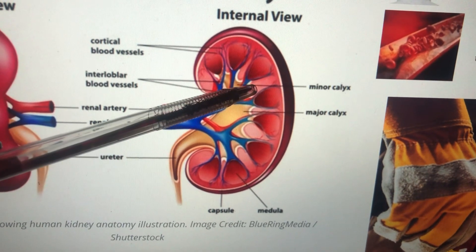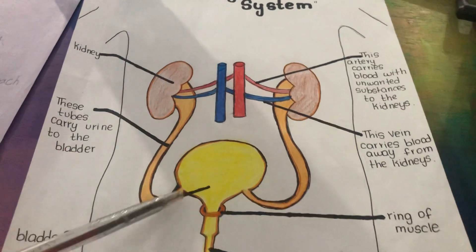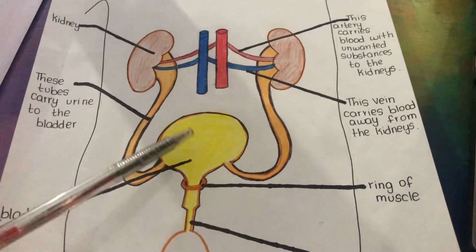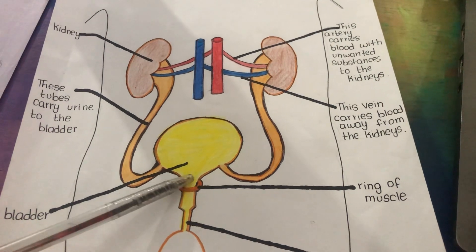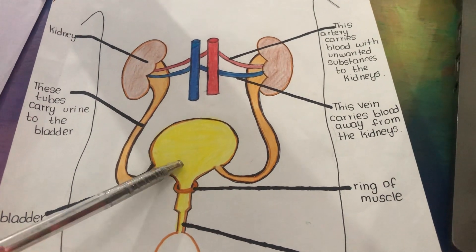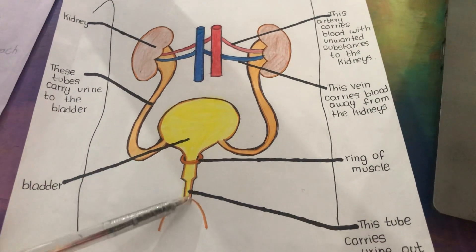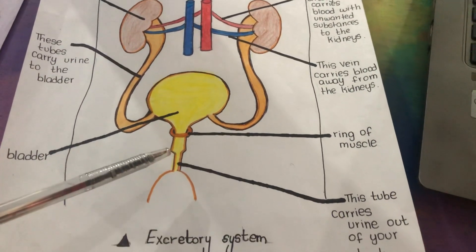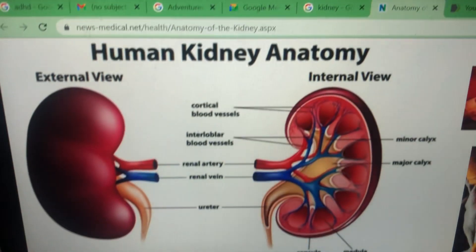Over here, urine enters the ureter and is carried all the way from the ureter to the human bladder. The bladder serves as storage for urine in the human body. There is a ring of muscle as well to prevent leakage of urine; it holds the urine until it's time to urinate. This tube is known as the urethra, which carries the urine out of your body.